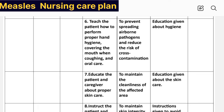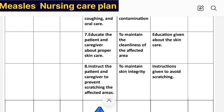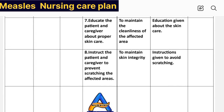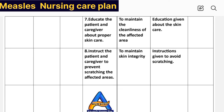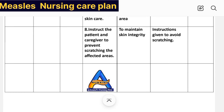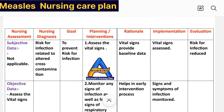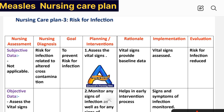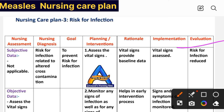Intervention number four: provide adequate ventilation in the room. Rationale: to allow enough oxygenation in the room. Implementation: adequate ventilation provided. Intervention number five: obtain a sputum sample for culture if the patient develops any phlegm. Rationale: to confirm the presence of any bacterial agents. Implementation: sputum culture obtained. Intervention number six: instruct the patient on proper hand hygiene, covering the mouth when coughing, and oral care. Rationale: to prevent spreading airborne pathogens and reduce the risk of cross-contamination. Implementation: education given about hygiene. Intervention number seven: educate the patient and caregiver about proper skin care to maintain the cleanliness of the affected areas. Intervention number eight: instruct the patient and caregiver to prevent scratching the affected area. Rationale: to maintain skin integrity. Evaluation: risk for infection reduced. Care plan number three complete.